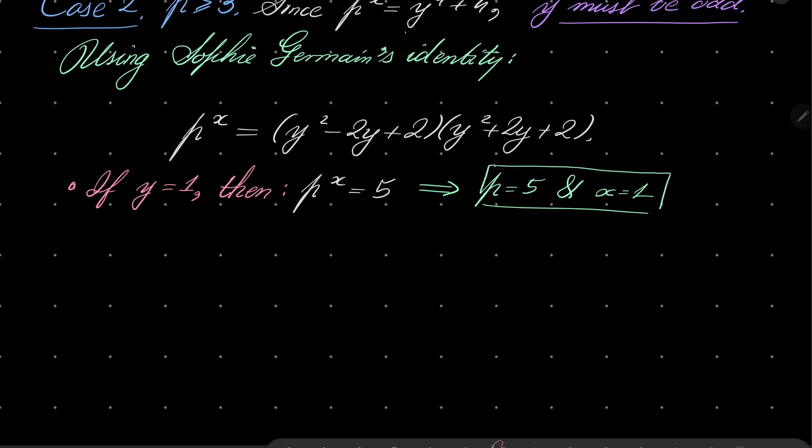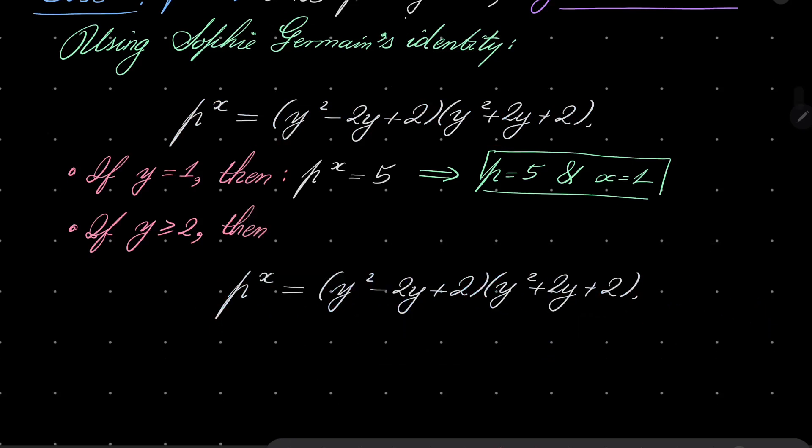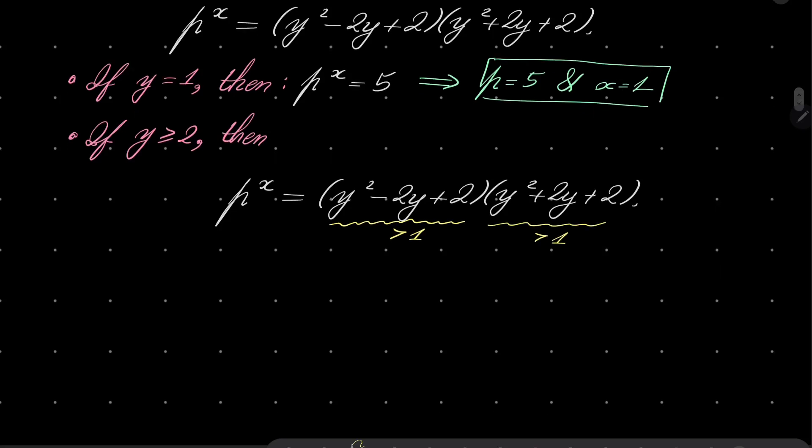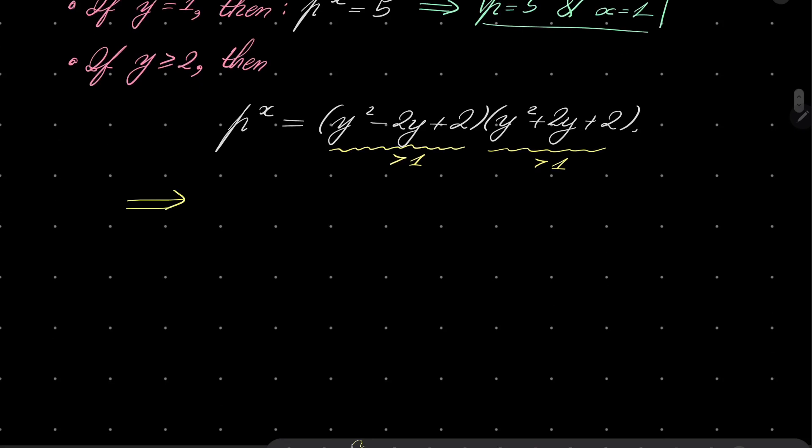Now, if y is greater than or equal 2, then notice the following. Let's take again our factorization. Let's take a look. Since y is greater than or equal 2, this number is greater than 1, strictly greater than 1. Likewise, this is also strictly greater than 1, which means that our prime to some power of x can be written as the product of two numbers greater than 1.